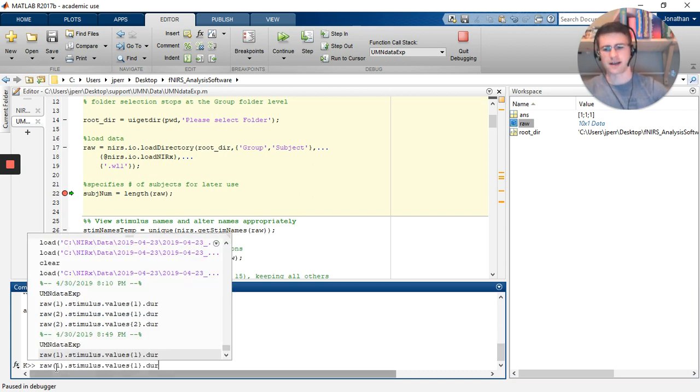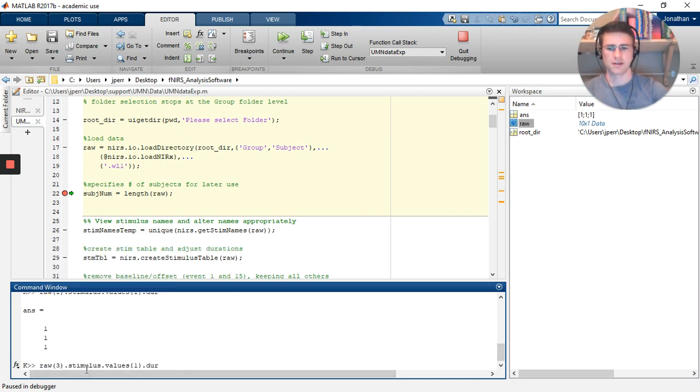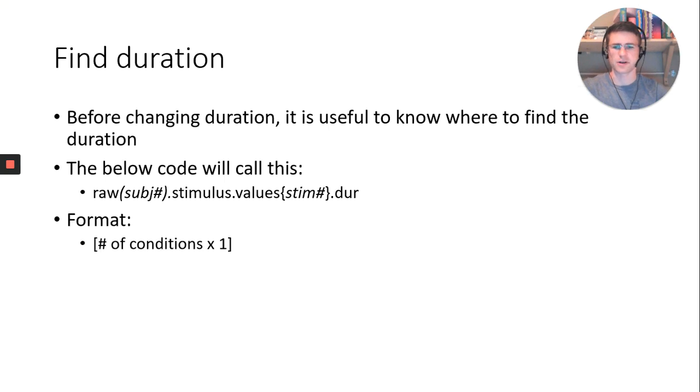If I want to alter this, I can do subject 3, values 1, I get the same output there. If I wanted to change to condition 2, I would do condition 2. All the conditions are the same. That may not always be the case, but for our sake today, that's what we'll go with. Keep in mind, the format of this output will be the number of conditions as your rows by one column.